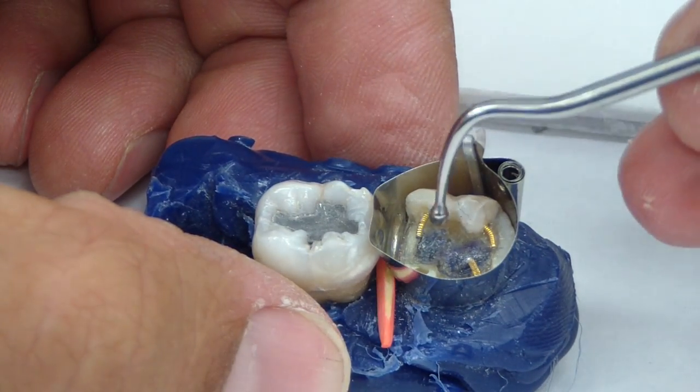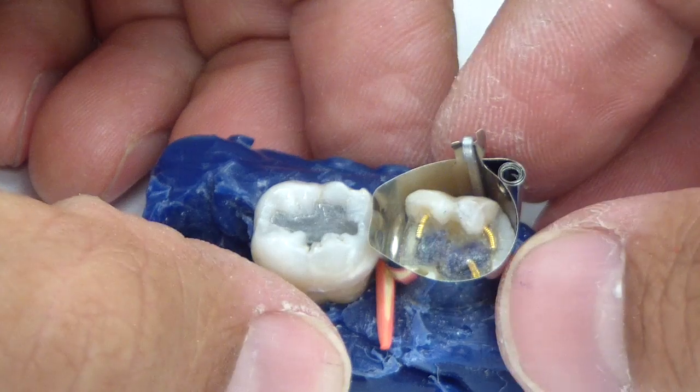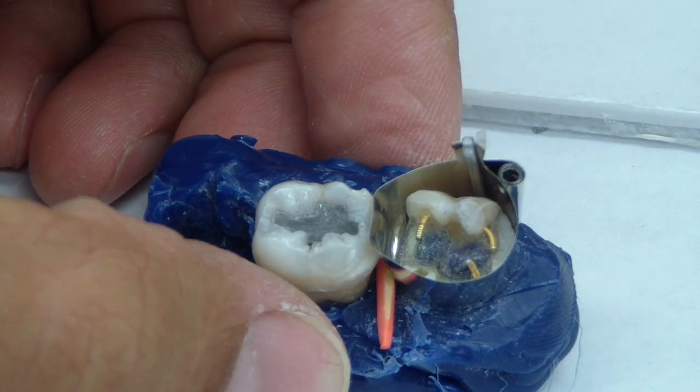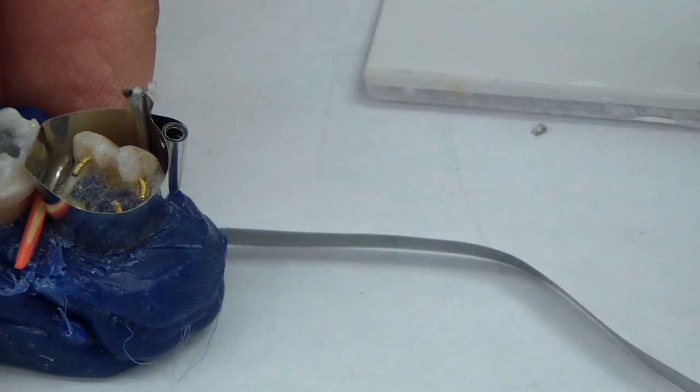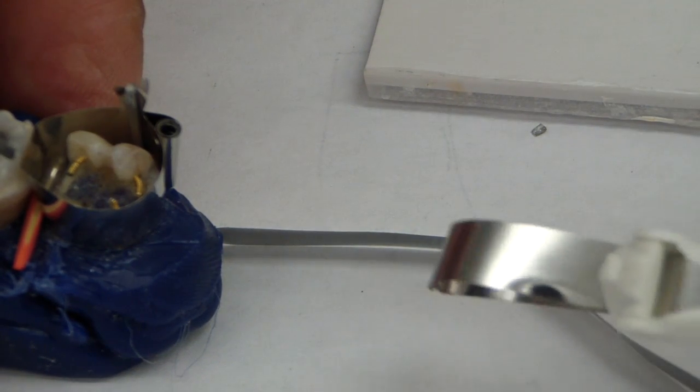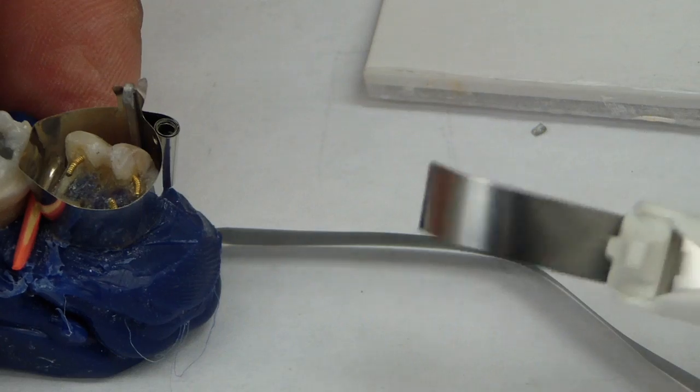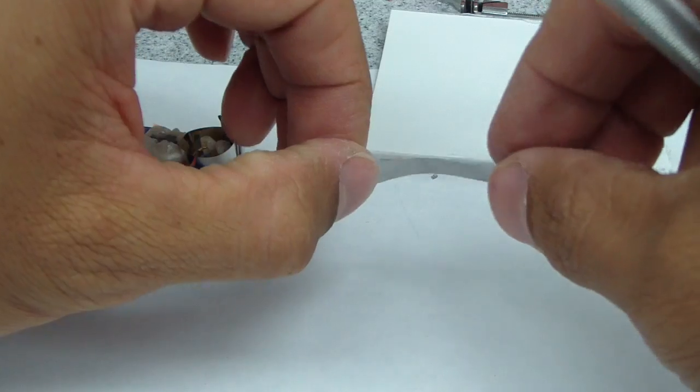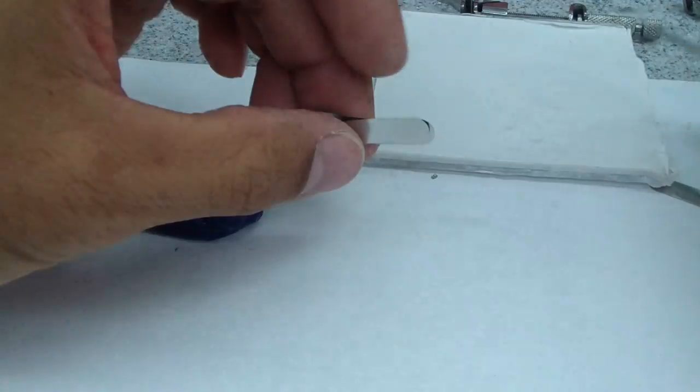And often, what we do, and this is with any stainless steel matrix, whether it be auto matrix, whether it be with Toffelmeyer, unless it's pre-contoured, or even omni matrix, unless it's pre-contoured, these are all flat, essentially when you go to place this band intraorally onto your tooth after you place it into your matrix system.